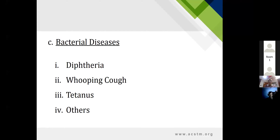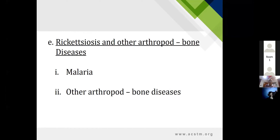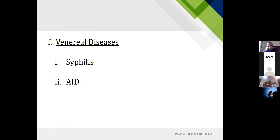In bacterial diseases in Pakistan, common ones are diphtheria, whooping cough, and tetanus. Out of viral diseases, acute poliomyelitis is being eradicated — in Pakistan and Afghanistan it is over 99% eradicated but not 100%. Other viral diseases include mumps, rabies, measles, chickenpox, smallpox, viral hepatitis, and now COVID-19 with its variants over the last two years.